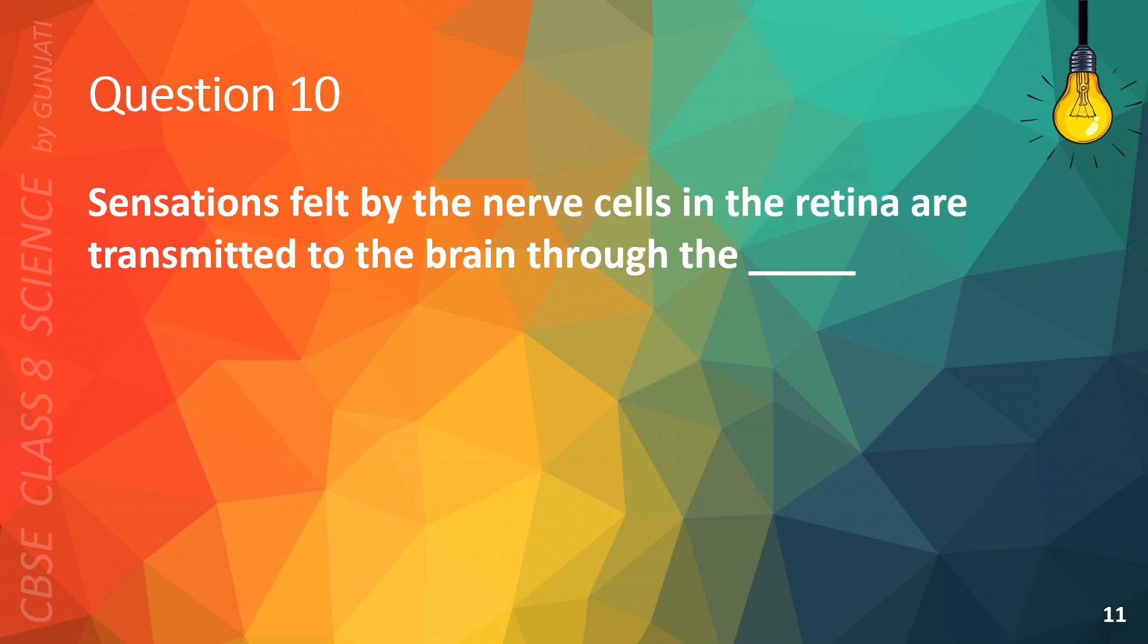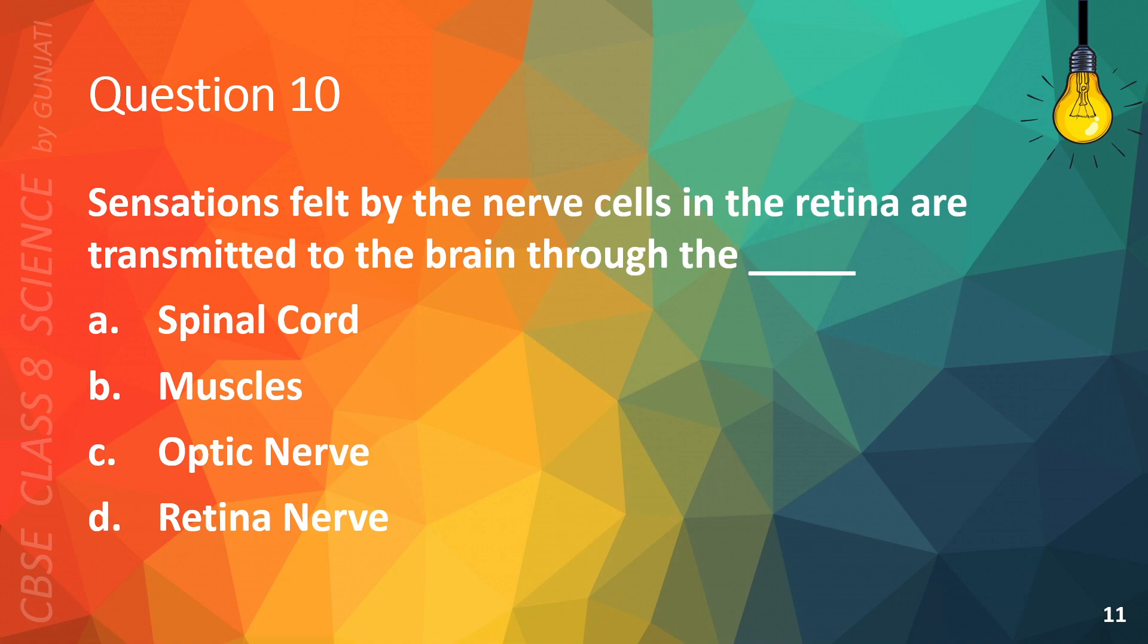Question 10. Sensations felt by the nerve cells in the retina are transmitted to the brain through the A. spinal cord, B. muscles, C. optic nerve, or D. retina nerve.